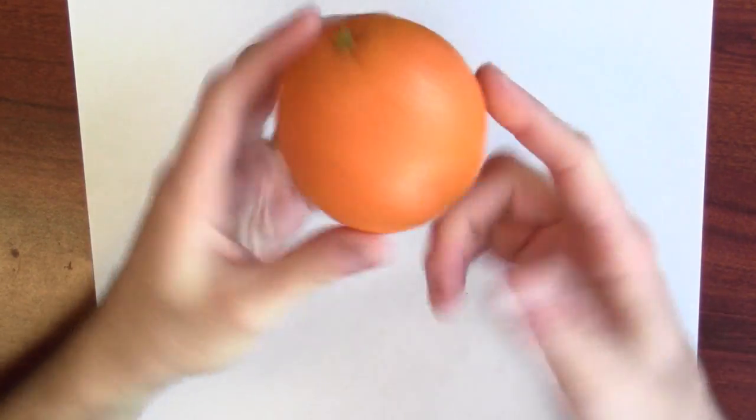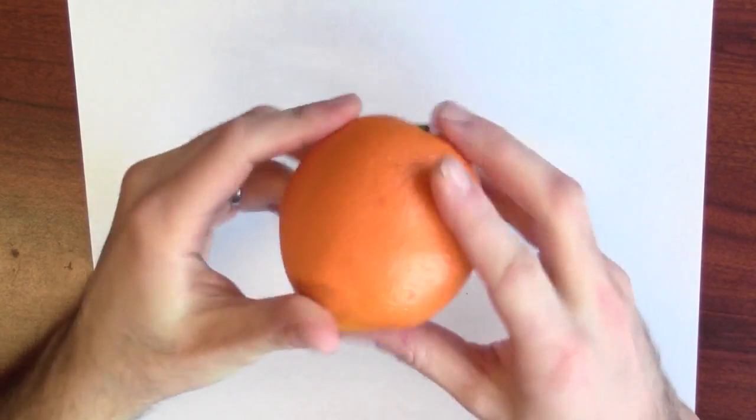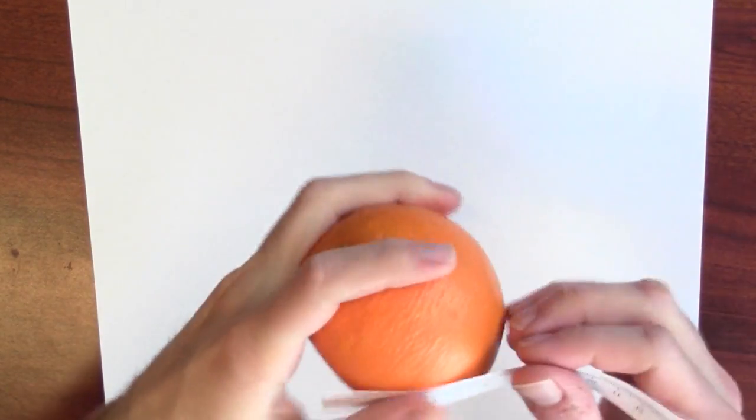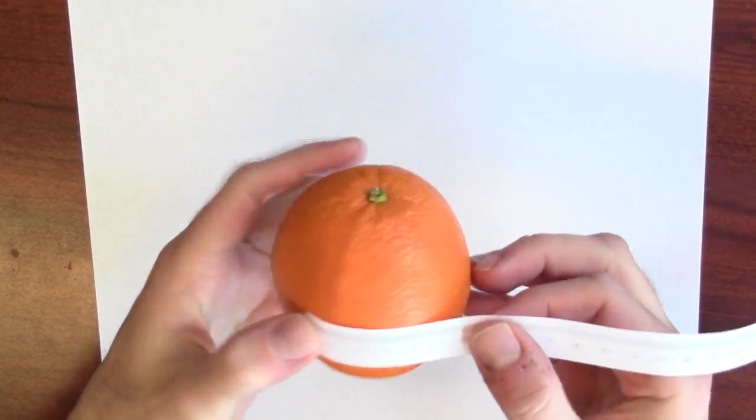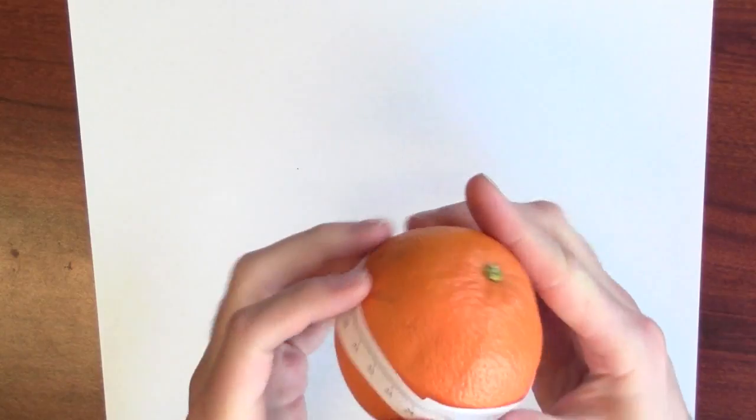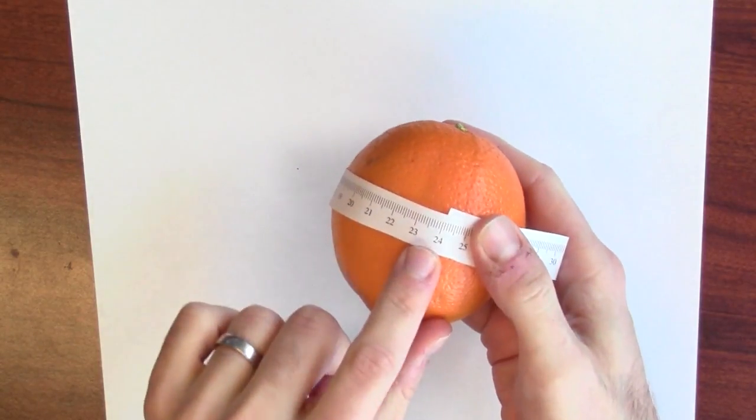Here, I've got an orange. I'd like to measure the radius of the orange, thinking of this orange as a perfect sphere. One way to do this would be to measure the circumference of the orange around its equator. If I measure that, it looks like it's about 24 centimeters.